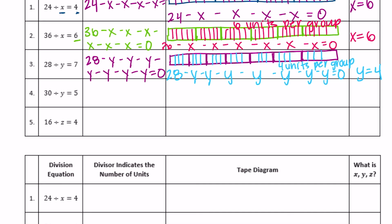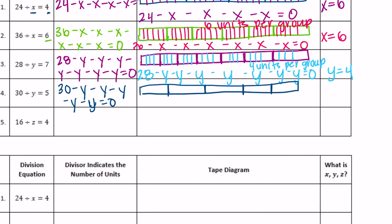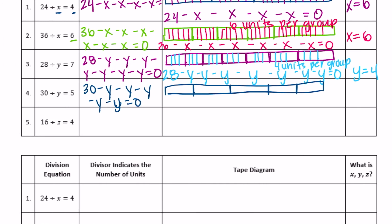Number four: 30 divided by Y equals 5. So there are five different groups. 30 minus five Y's is equal to zero. I'm going to separate this into five groups, and 30 divided by 5 is 6, so in each group there are six units. So Y is equal to six.